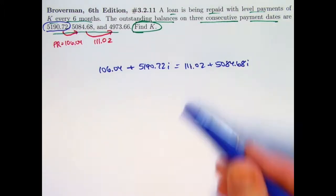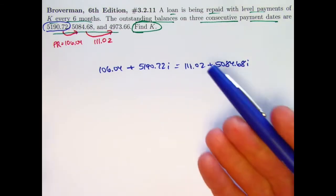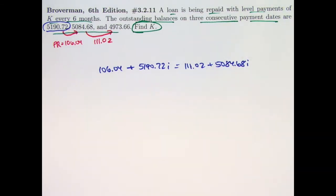So to solve the problem, we can solve this equation for I, and then we can use either side with the solved value for I to find the total payment. We can plug that value of I back into either side. We should get the same thing.